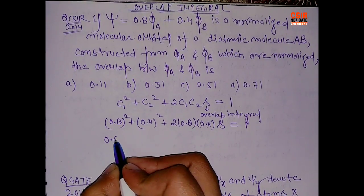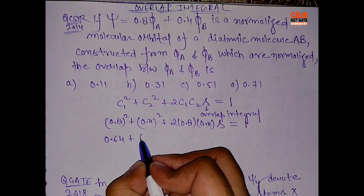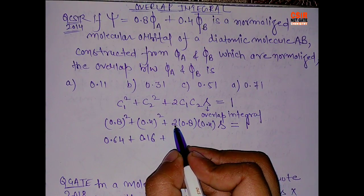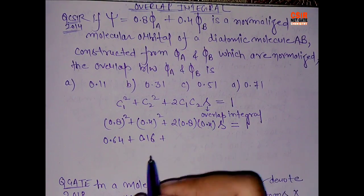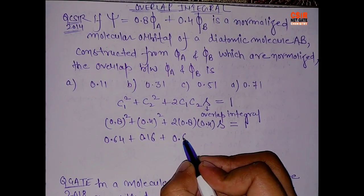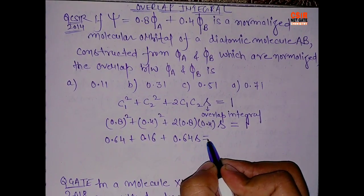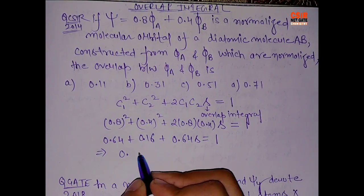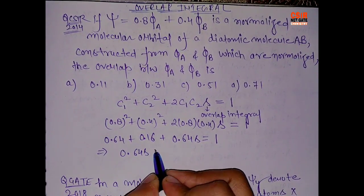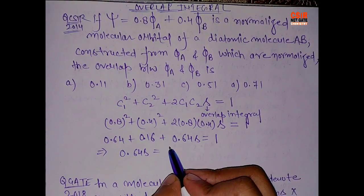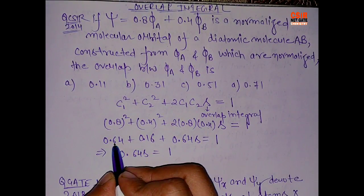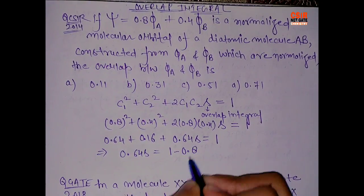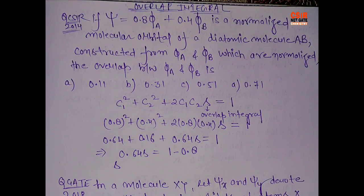This is 0.8 square, which gives 0.64, plus 0.16, plus 0.64s equals to 1. Now you have to solve it. This is 0.8.